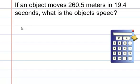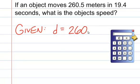We're going to begin with the given. If an object moves 260.5 meters, we know that 260.5 meters is a measurement of distance. In 19.4 seconds, we know that seconds is a measurement of time.